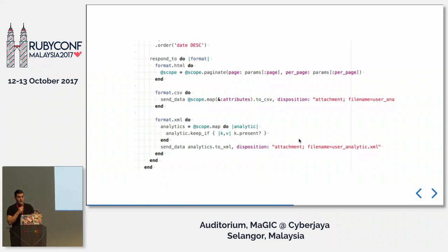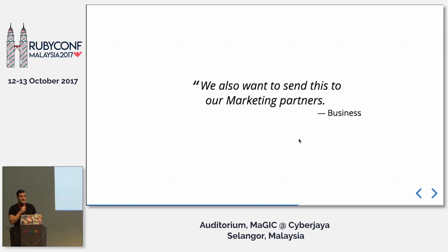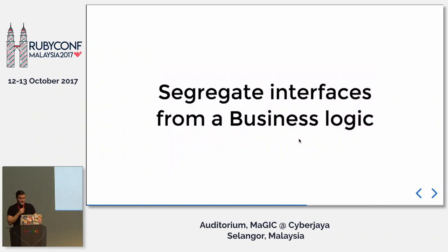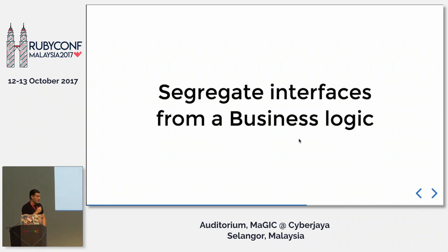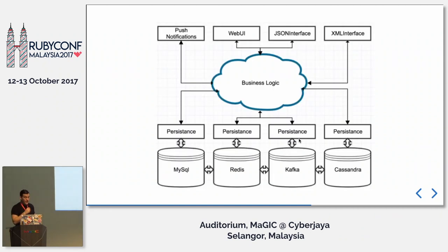And then your business says: we have a new awesome marketing tool and they would really like to have this data — can we send it to them? And you're like: not really. So this means that ideally you need to segregate your interfaces from your business logic. Because the moment you have a certain requirement to display certain data in a certain format, this represents a certain business value. Separating those interfaces pays you back once you need to provide this particular business thing to other interfaces like CSV, XML, or webhooks. So you end up with lots of interfaces that all point into your business logic.